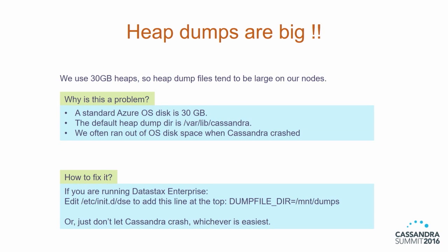Heap dumps are very big. We use 30 gig heaps, so heap dumps will be very large on our clusters. Interestingly, the standard Azure OS disk is also 30 gigs, which means when Cassandra crashes, it generates a 30 gig file, chews the entire disk space, and the node goes down. If you are running DataStax Enterprise, it's fortunately easy to fix — you can edit the DAC script and add the dump file line so that dumps go to a better location, not the OS disk. Or just don't let Cassandra crash.